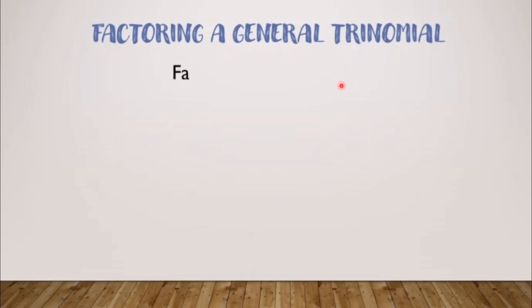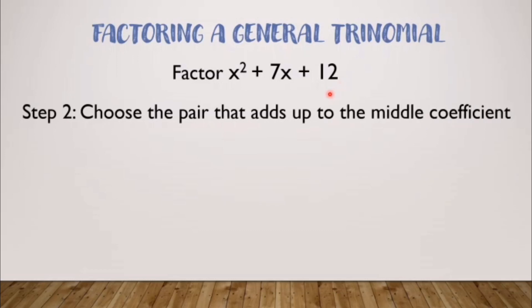After listing all, we will now proceed with step 2. In step 2, we will simply choose the pair that adds up to the middle coefficient. Our middle coefficient is 7. It's in the middle, that's why it's called middle. And coefficient talks about the number itself. We're now looking for the pairs of numbers we listed that when added, the answer is 7. Our first is 1 and 12, 2 and 6, 3 and 4. If we add 1 and 12, we'll have 13. If we add 2 and 6, we'll have 8. If we add 3 and 4, we'll have 7. So which among these pairs when added equals 7? We have 3 and 4.